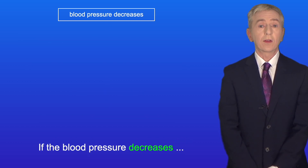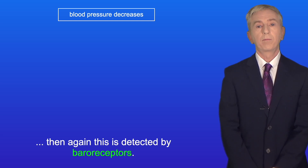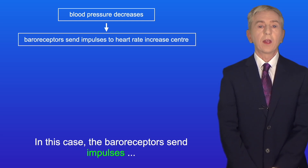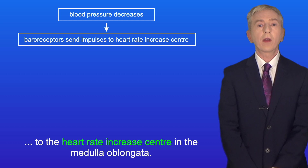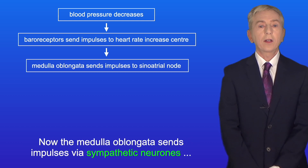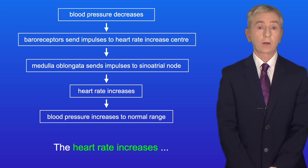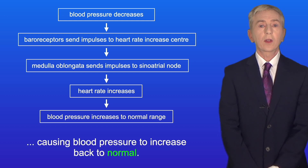If the blood pressure decreases, this is again detected by baroreceptors. The baroreceptors send impulses to the heart rate increase center in the medulla oblongata. The medulla oblongata sends impulses via sympathetic neurons to the sinoatrial node, causing the heart rate to increase and blood pressure to rise back to normal.